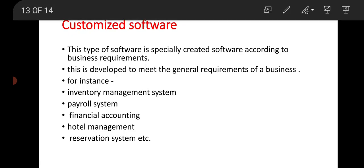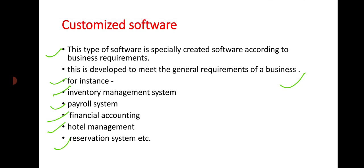The third category is customized software. This type of software is specially created according to business requirements and is developed to meet the specific needs of a business or organization. Examples include inventory management systems, stock management systems, payroll systems, financial accounting, hotel management, and reservation systems.